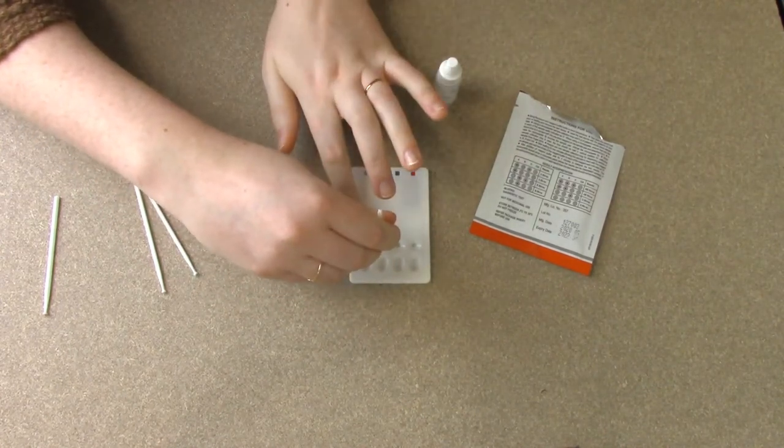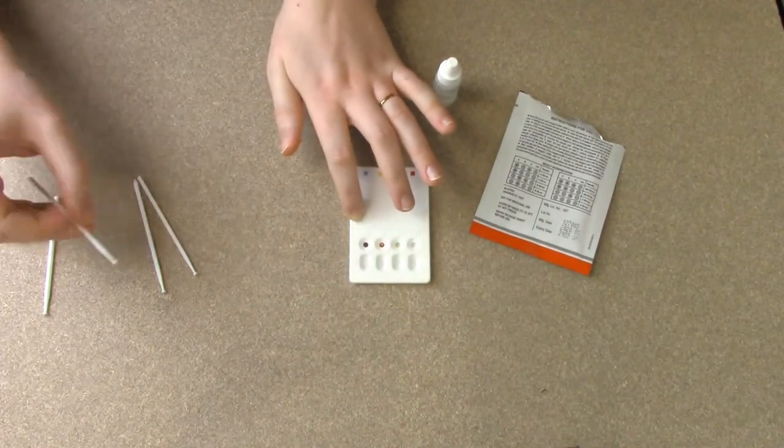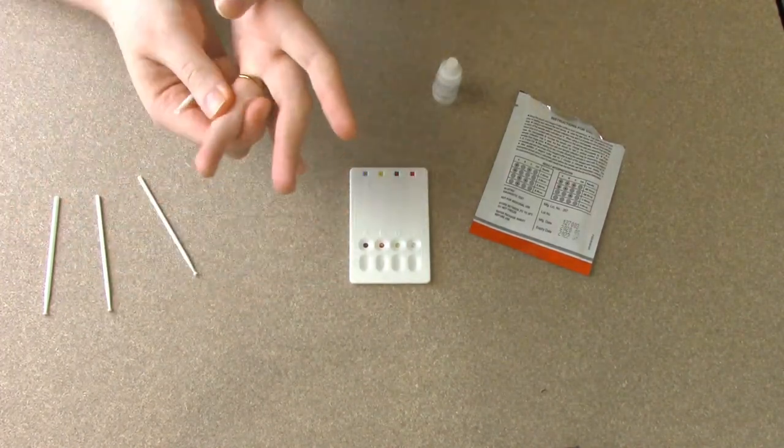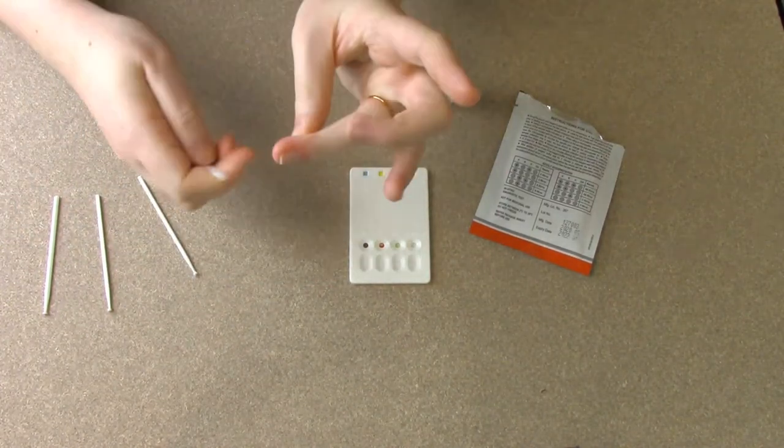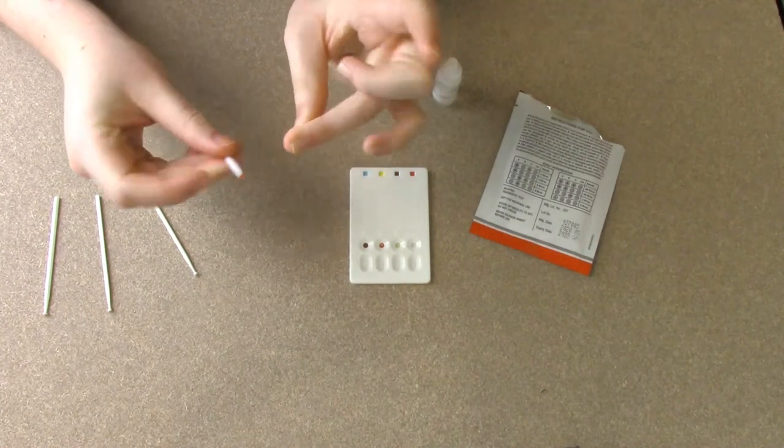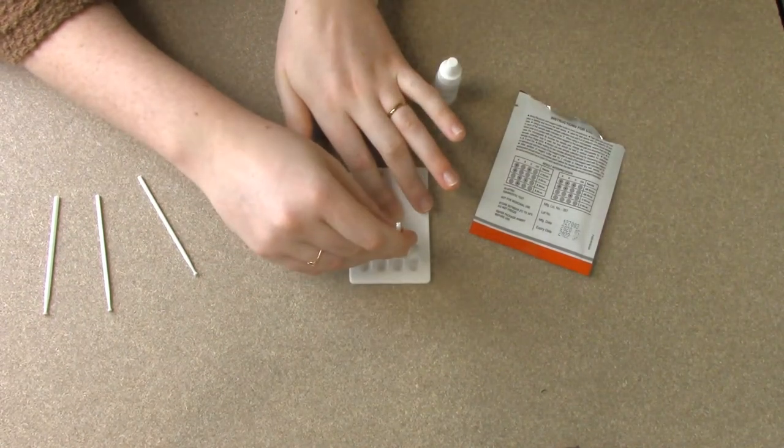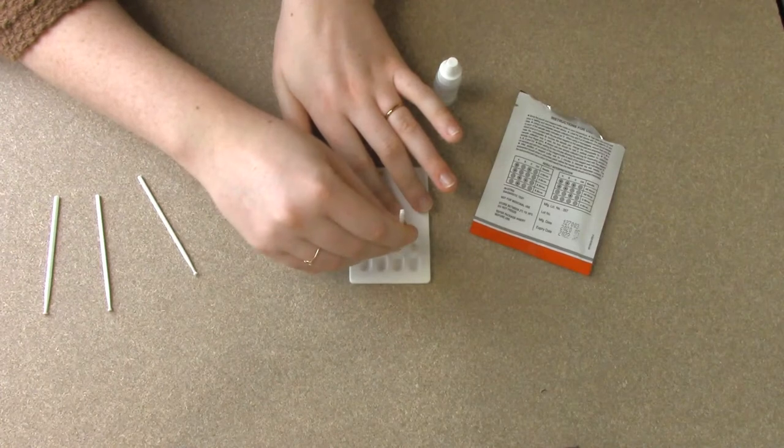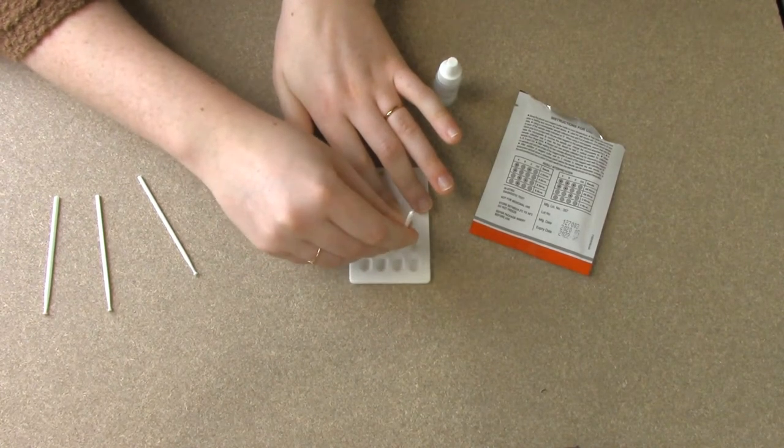And we are putting this blood into the row that's labeled S. We're not going to put any blood into the R row at the bottom. Get my third drop here. Remember to use a different stick for every single sample and drop. I have it in D now.